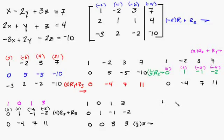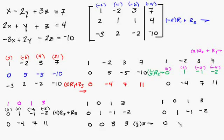Now copy everything over: 1, 0, 1, 3, 0, 1, negative 1, negative 2. 0 times 1/3 is 0. 3 times 1/3 is 1. 3 times 1/3 is 1. So look — we've got the 1's. Now what we've got to do is get these to become 0's here.